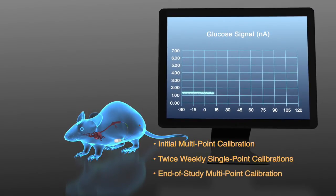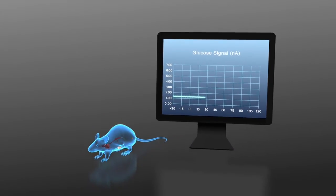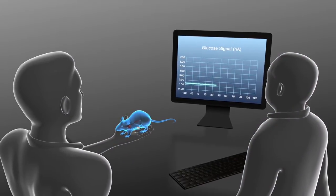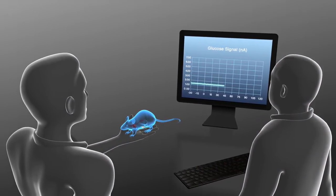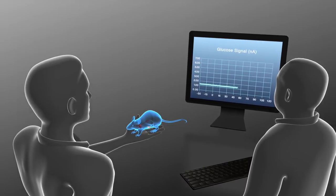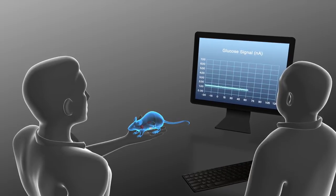We will introduce multi and single point calibration procedures to you. The calibration process should be conducted by two people. The first person records calibration values on the computer and informs the second person when to draw samples. The second person handles the animals, collects blood samples, and reports the calibration values to the first person.